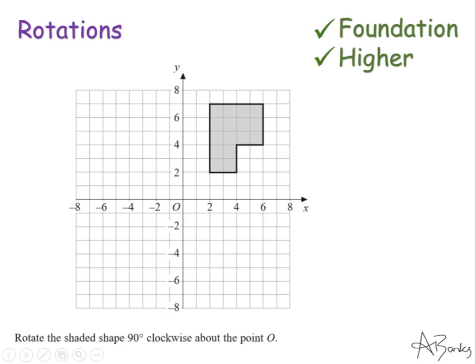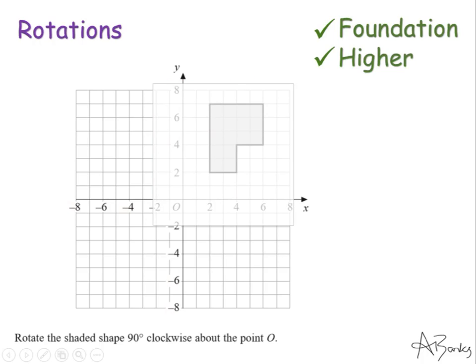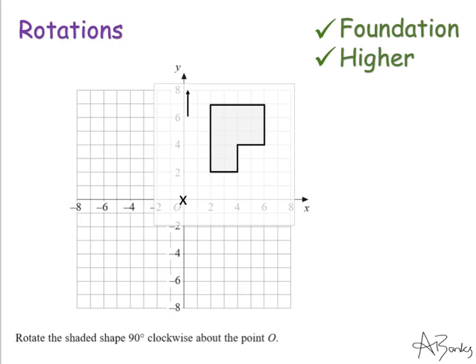The first thing you should do is place your tracing paper not only over the shape but it also needs to cover the center as well. So it needs to go over here. Once you've placed your tracing paper on, you need to mark on the center. Put a cross where the center is and you also need to trace around your shape like that.